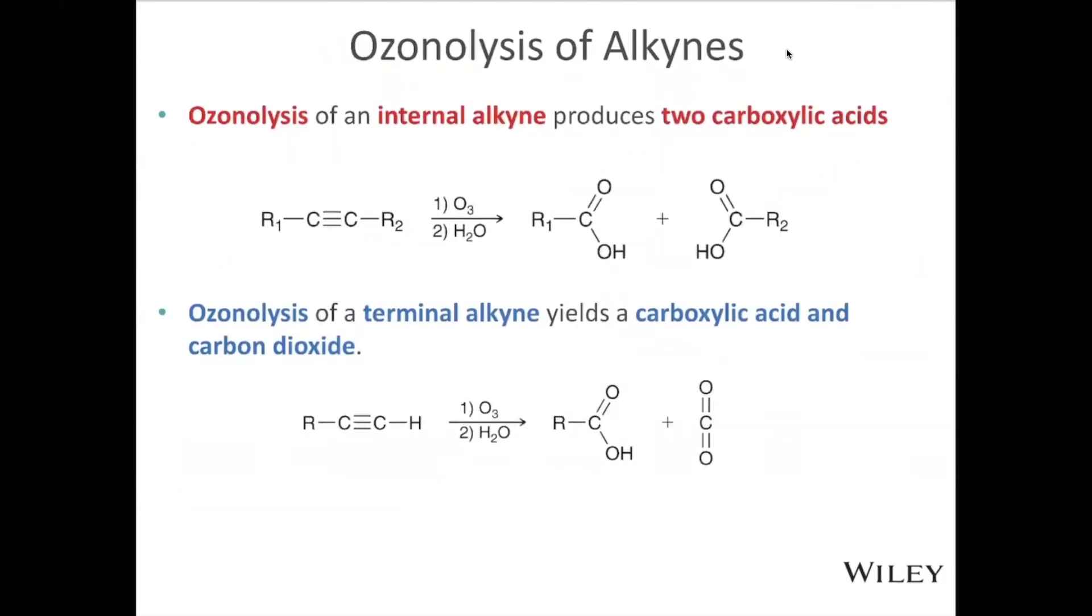Ozonolysis is the next reaction. And if you can remember with ozonolysis of an alkene, we cut that bond in half and formed two ketones and or aldehydes. With the alkyne, this oxidative cleavage is going to create two carboxylic acids instead. And so if you remember with the alkene, I said you just draw a line down here. So we have R1 with a C, and now we're just going to put a carboxylic acid there, and R2 with a C, and we're going to put a carboxylic acid there. That is what happens when you have an alkyne that undergoes ozonolysis.